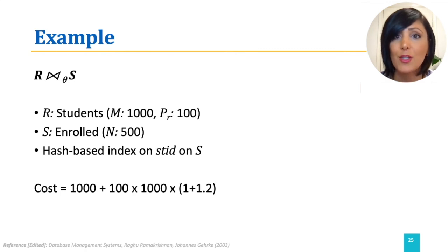Therefore, the total cost is 1000 plus 2.2 times 100,000, which is 221,000 I/O operations.